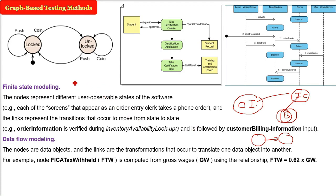So FTW, for example, FICA tax withheld. This is computed from the gross wages or the salary GW. So what are the relationships? FTW is equal to some number into GW. Let us take, for example, the number is 0.62. Just a random number we are taking. So this is how the computation will be done. So this is how the data flow modeling you can make.